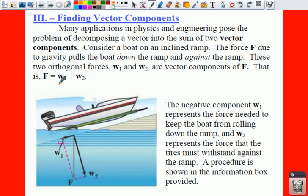What you're going to have is two vectors, W sub 1 and W sub 2. According to this picture, your W sub 1 is parallel to the ramp, or it's a force that is needed to keep the boat from rolling down the ramp. This is your force that actually keeps your boat from sliding.